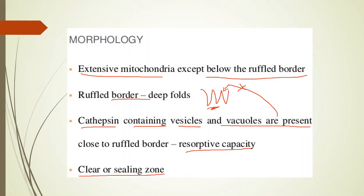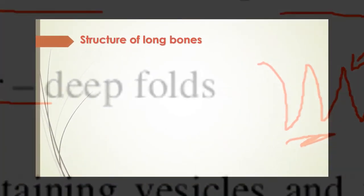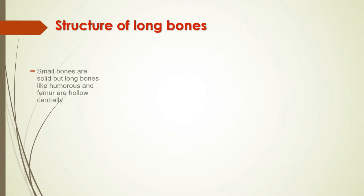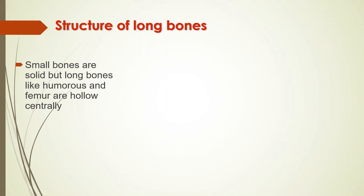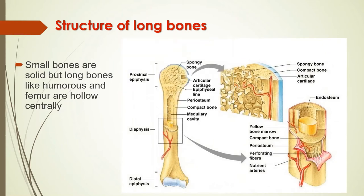Now we will study the structure of bones in detail. Though small bones are solid, most long bones such as the humerus and femur are hollow centrally, each having a central cavity called the bone marrow cavity. Under the electron microscope, the marrow cavity has a vast network of thin-walled sinusoids lined by a single layer of endothelial cells. This marrow cavity is filled with soft, vascular, fatty tissue called bone marrow, also called myeloid tissue. Bone marrow is of two types: red marrow and yellow marrow.